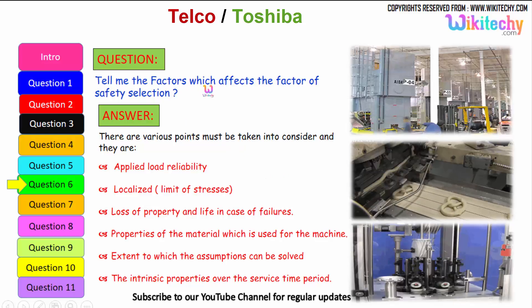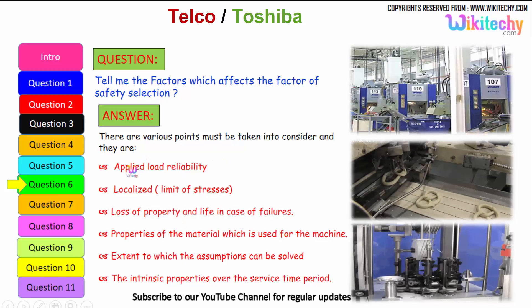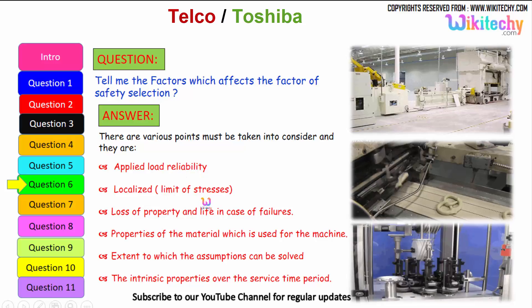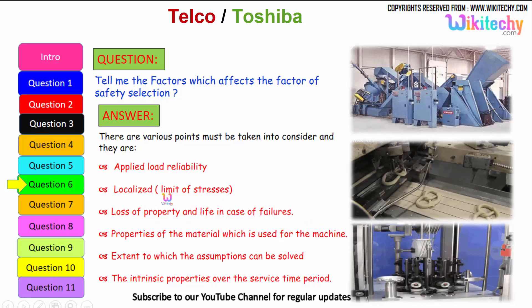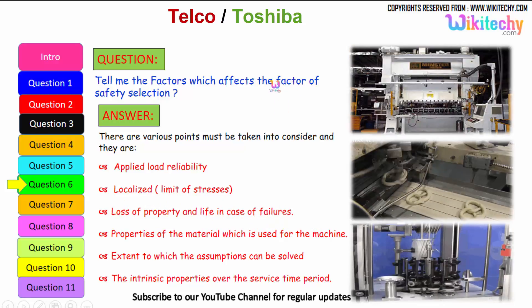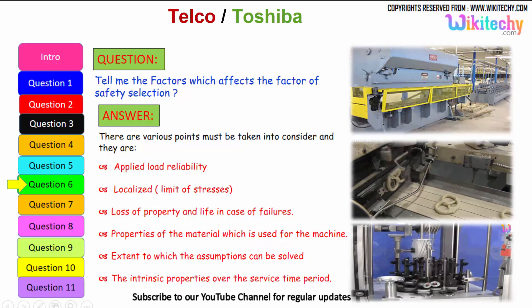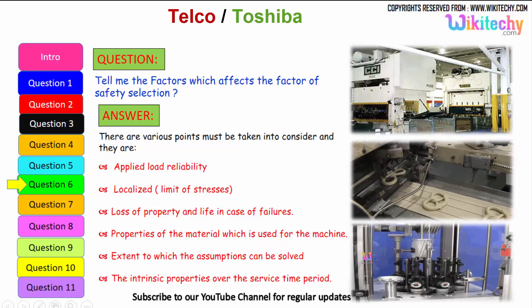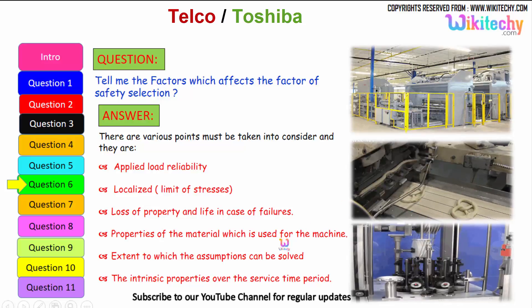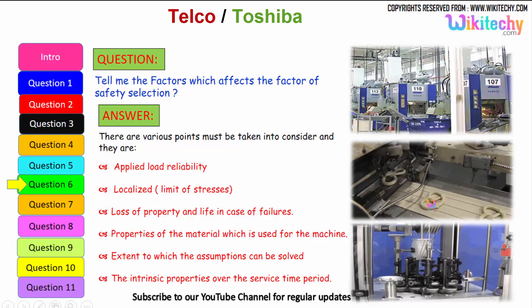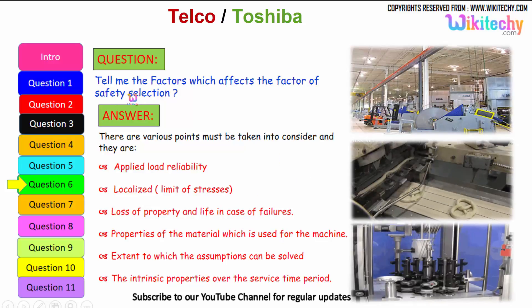Now let us see the factors which affect the factor of safety selection. These include: applied load reliability; the limit of stress as localized; loss of property and life in case of failure; properties of the material used for the machine; the extent to which assumptions can be validated — how much it will extend, compress, and so on; and the intrinsic property over the service time period — how it will sustain over time.